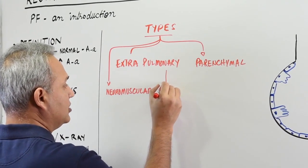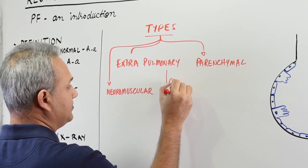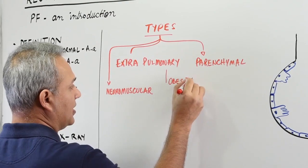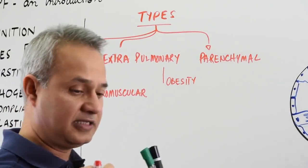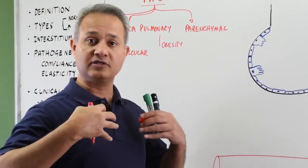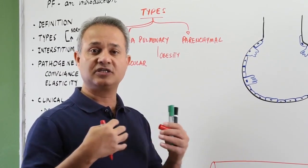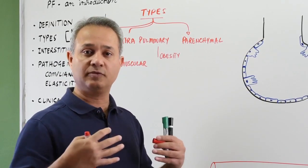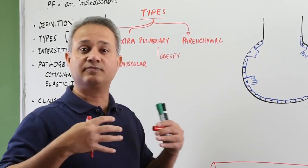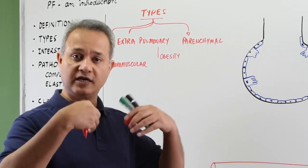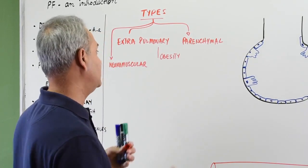Extra pulmonary, for example, obesity, simplest. Patient is so obese that there is enough weight on the chest that patient is not able to move the chest properly and so lungs are not expanded correctly and there is not enough air that goes in.